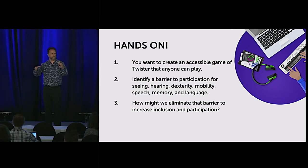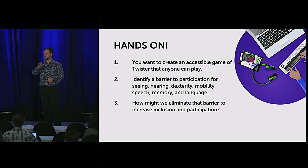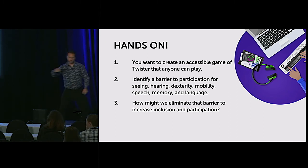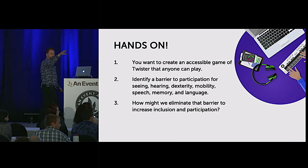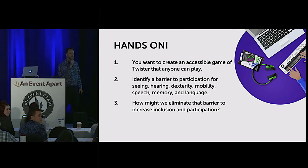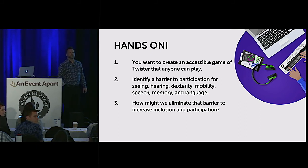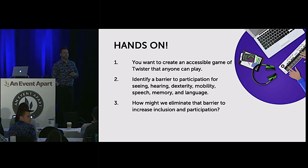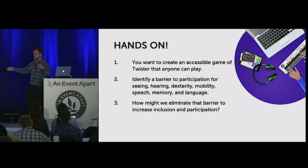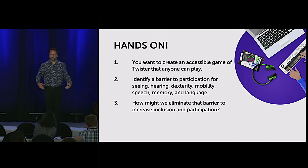Somebody from the back shared: for someone with seeing challenges, you could have different sound tones for right hand, left hand, so that different tones would indicate left hand, right hand, left foot, right foot. Another contribution: the body labels are really specific — they could be much more generic to let a lot of different kinds of people play. What about somebody that doesn't have hands? Somebody may not have legs. So could we make those things more generic so people feel like, yeah, I can play this game? And for somebody in a wheelchair, what if we made the board so it's not just flat on the ground but goes up the wall partly too, so somebody sitting in a wheelchair could reach it?